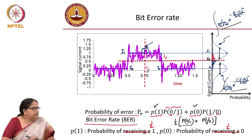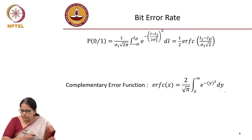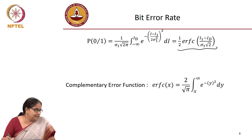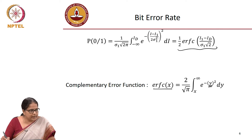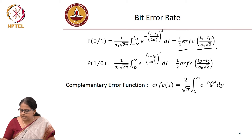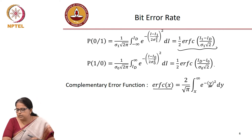The next job is algebraic: you just do the integration of this nice Gaussian distribution. Gaussian is nice because it gives nice integration results. Probability of 0 given 1 is written in terms of the complementary error function. You define the complementary error function of variable x as the integral from x to infinity of e to the power minus y-squared dy. Substituting gives P(0|1) as erfc of (i1 − iD) / (sigma1 × root 2), and P(1|0) as half erfc of (iD − i0) / (sigma0 × root 2).